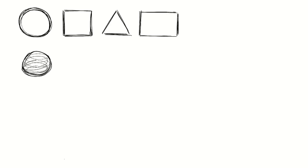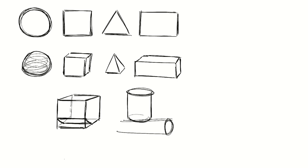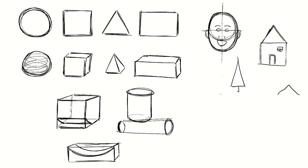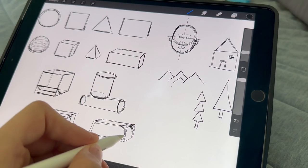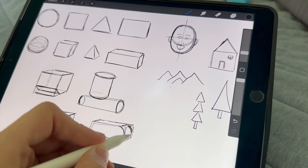The first step is to practice with basic shapes. Start by sketching simple geometric forms like circles, squares, triangles and rectangles. These shapes serve as the building blocks for more complex objects. By understanding how to manipulate and combine these shapes, you can easily construct the framework for any object you want to draw.